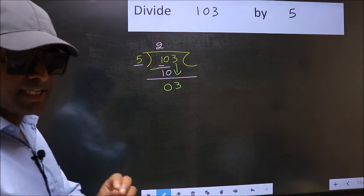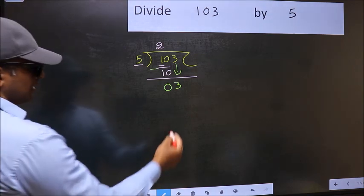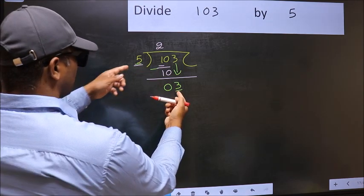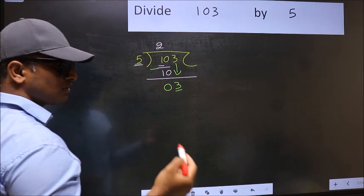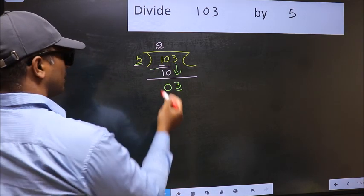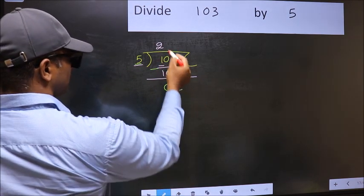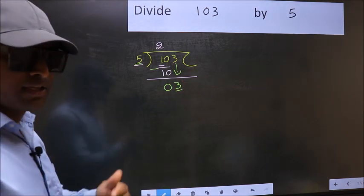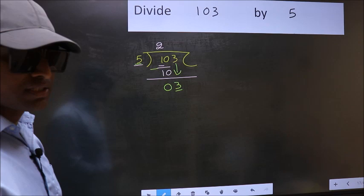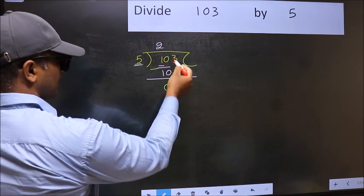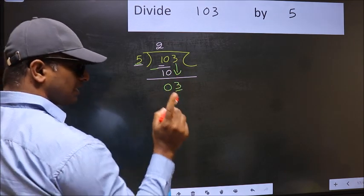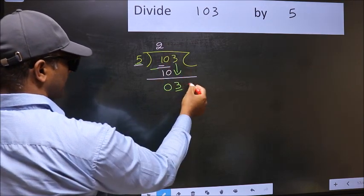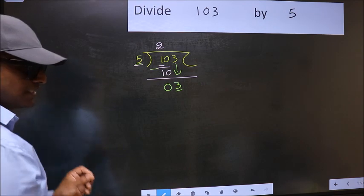And the mistake is this. Here we have 3 and here 5. 3 is smaller than 5, so what many do is they directly put dot and take 0. Which is wrong. Why is it wrong? Because just now you brought this number down, and in the same step, you want to put dot and take 0.